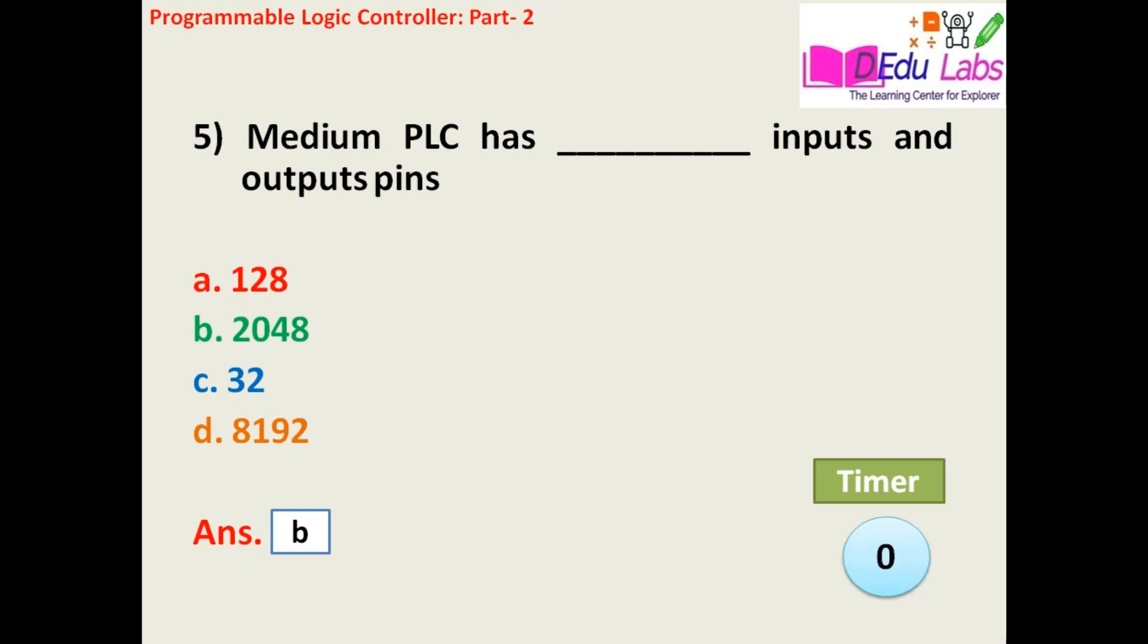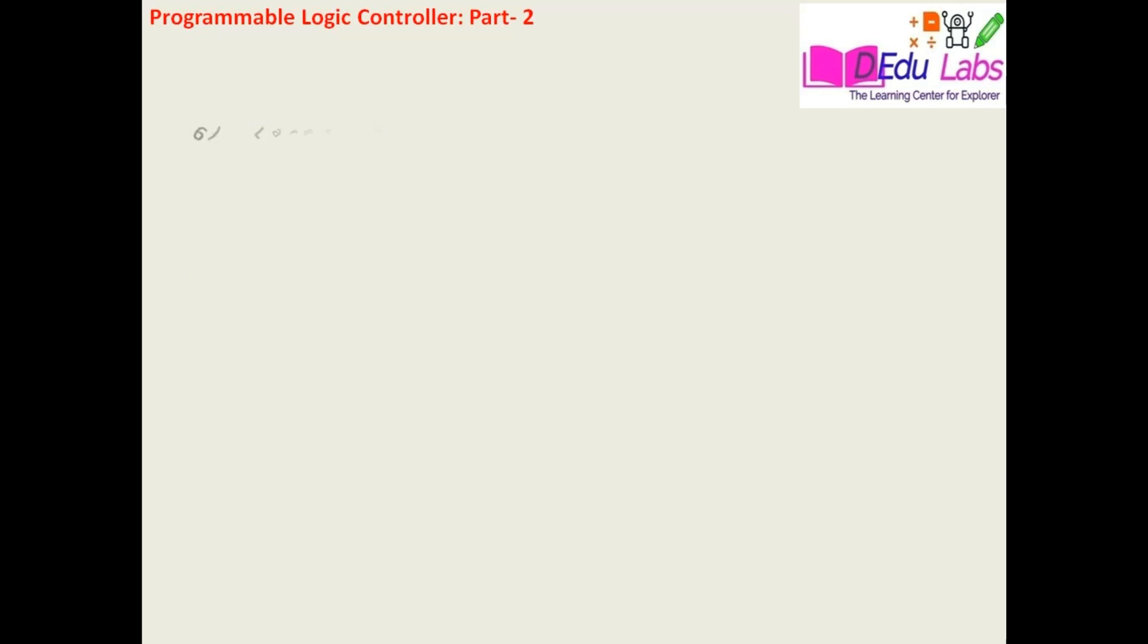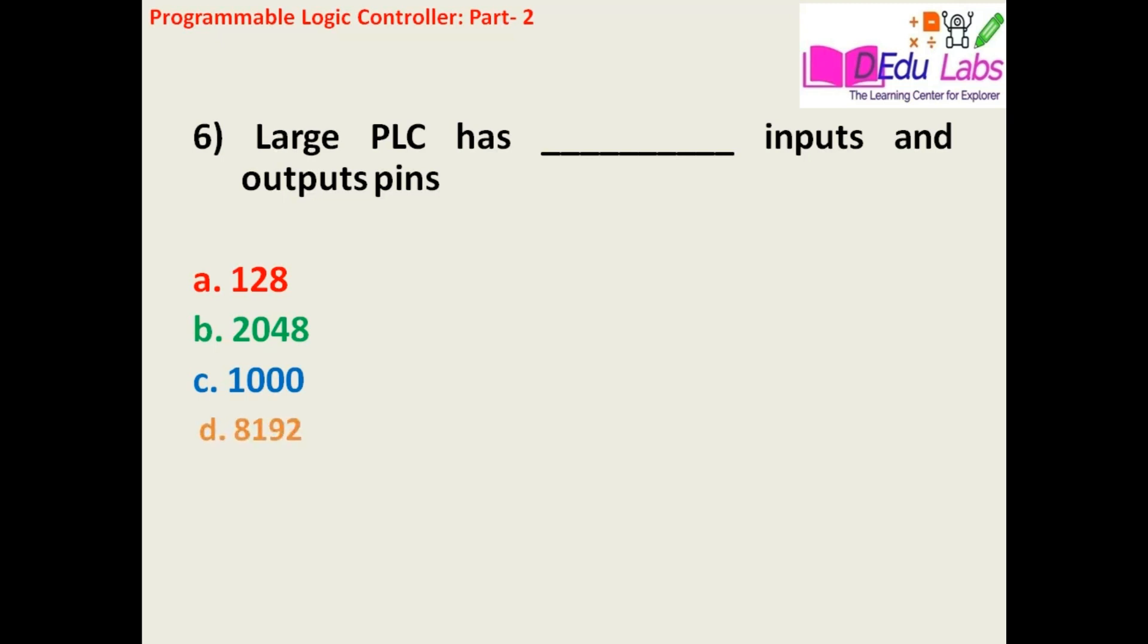Question number six: The large PLC has blank inputs and output pins. Option A: 128, Option B: 2048, Option C: 1000, Option D: 8192.